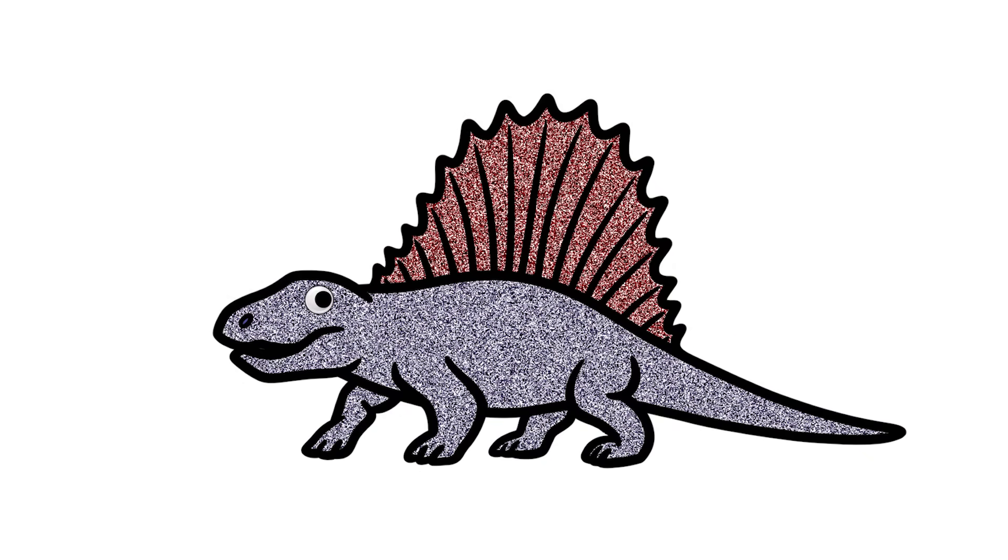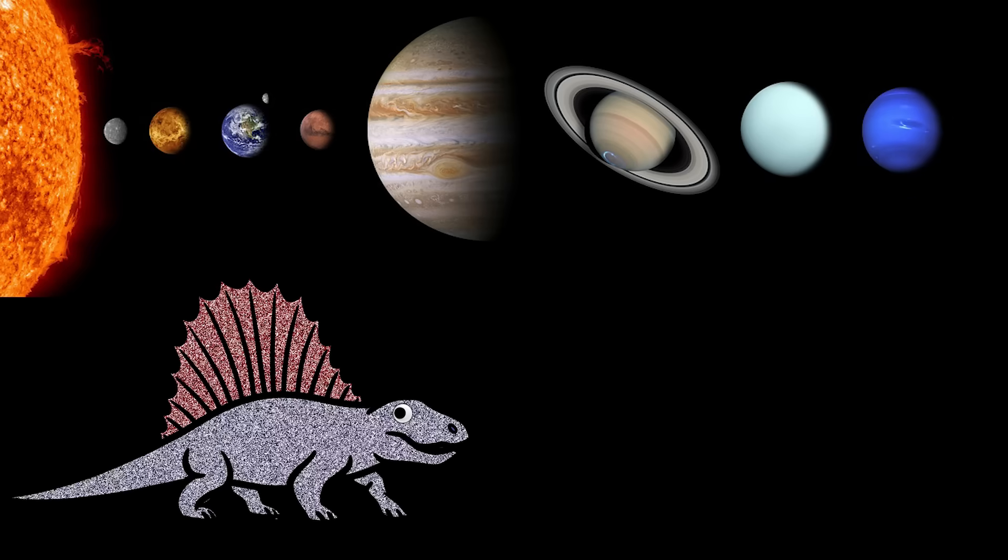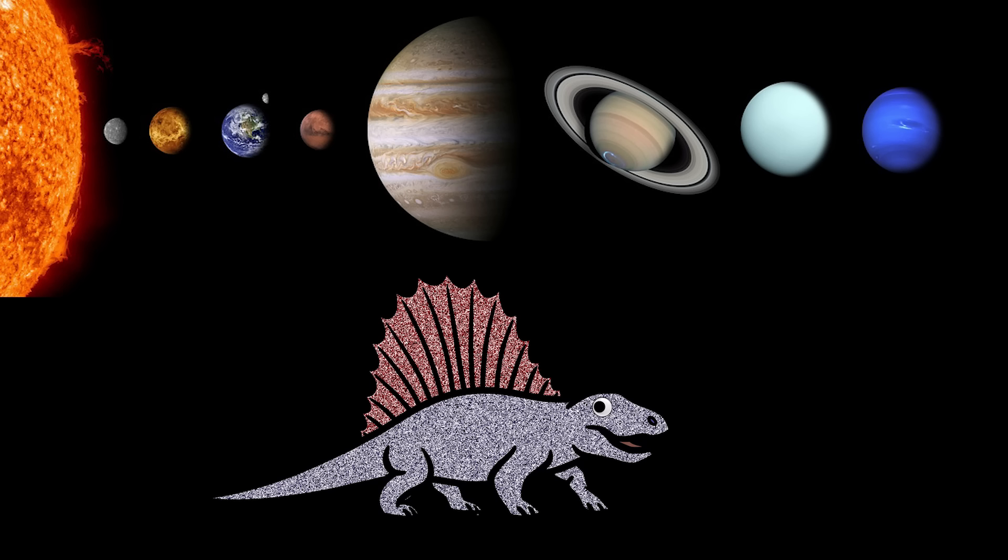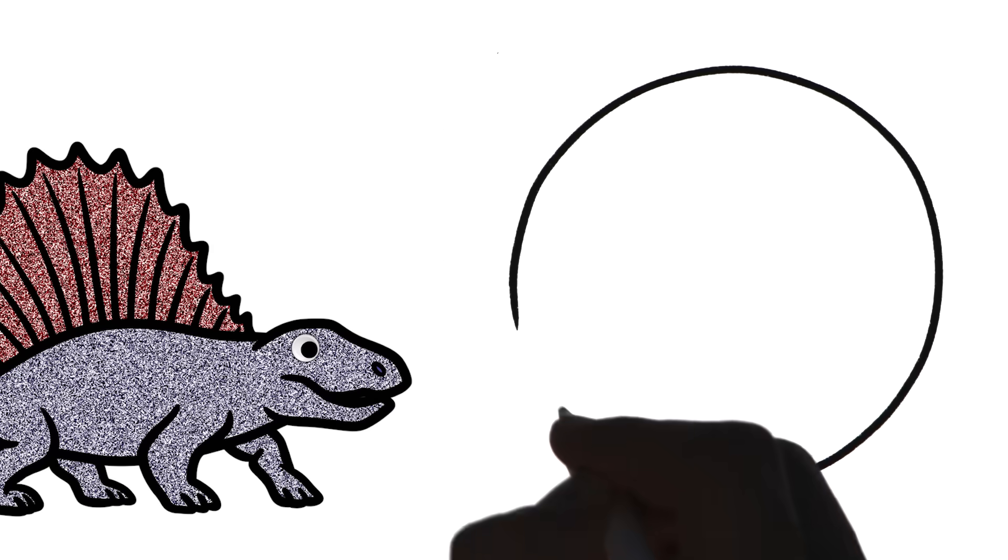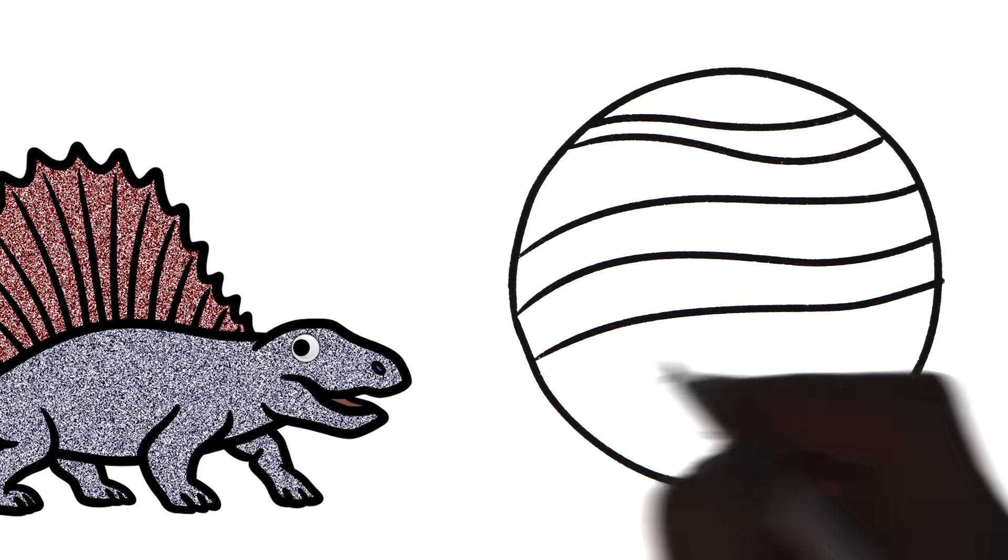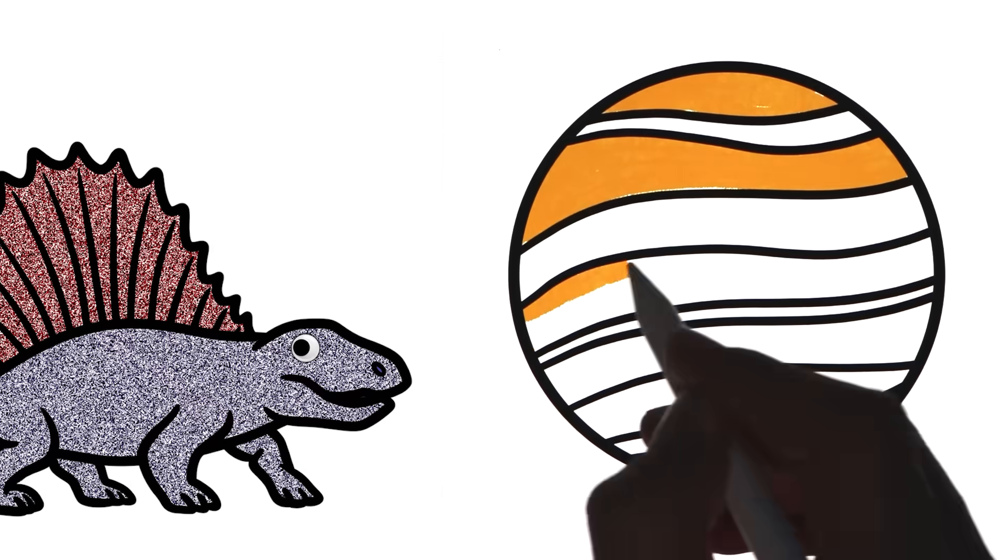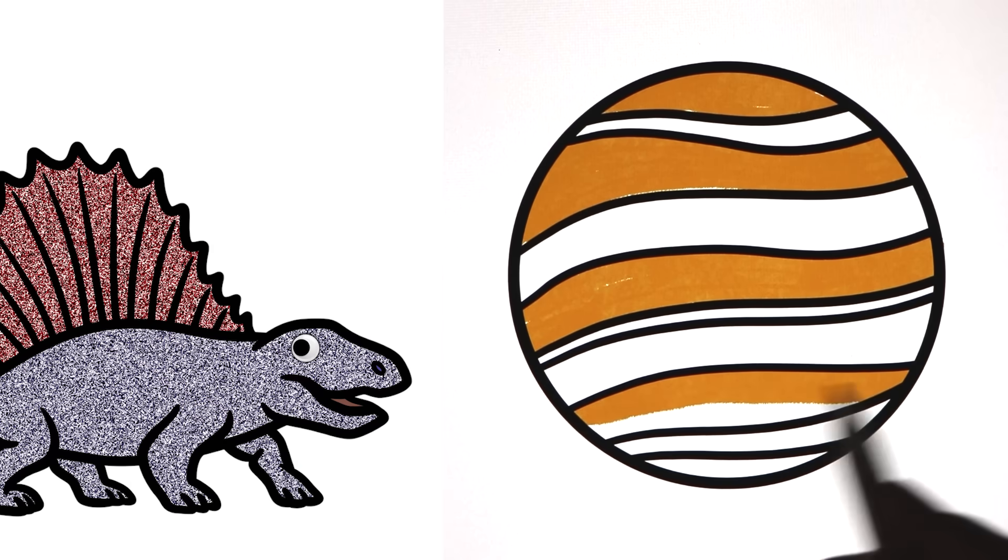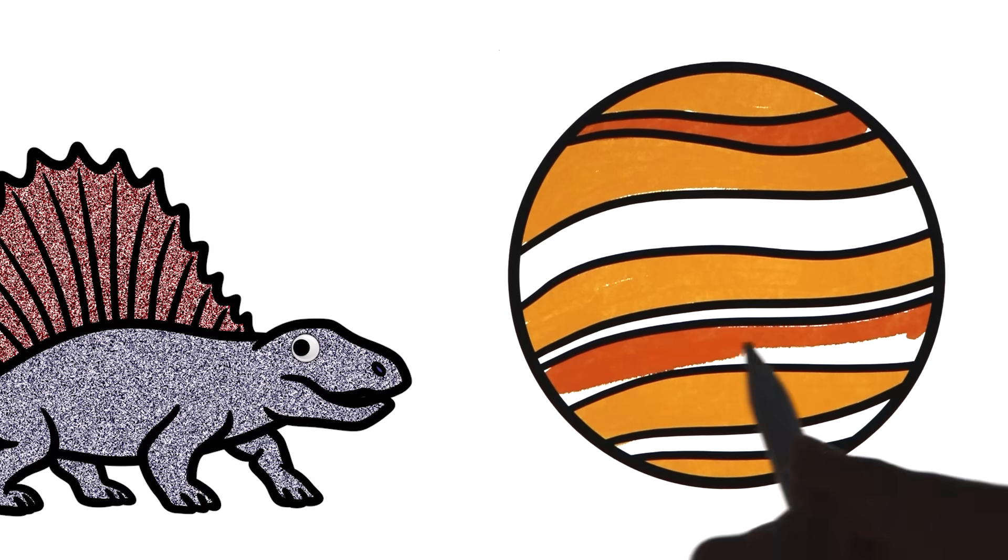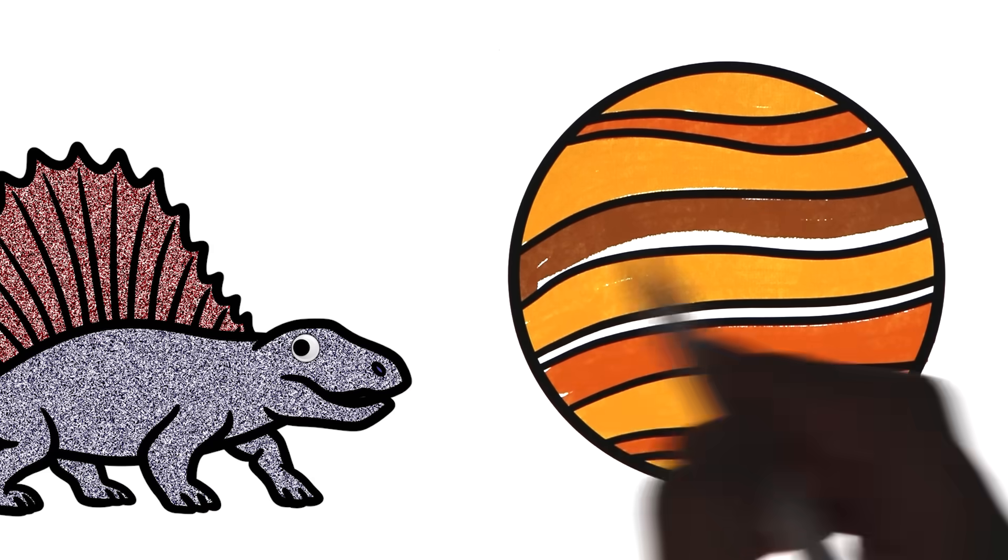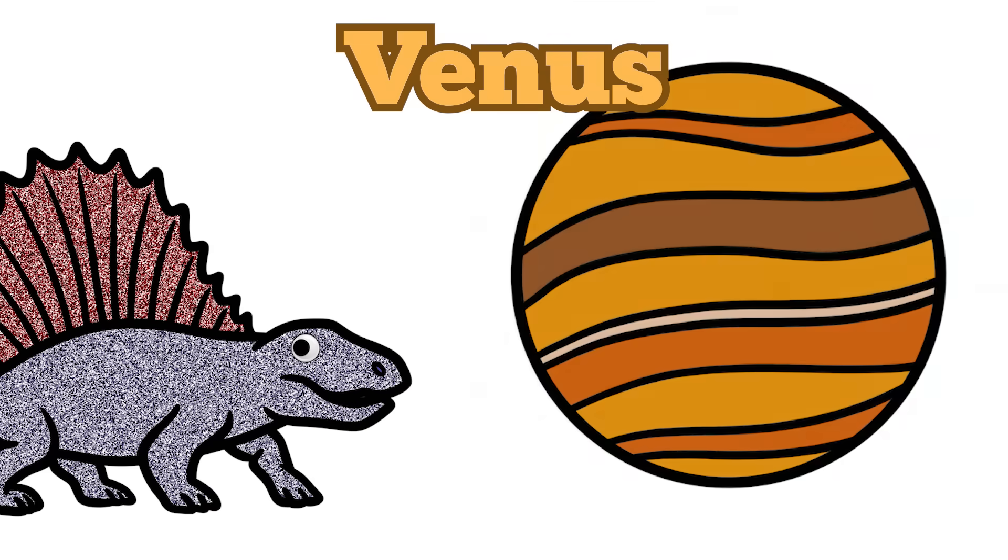Hello, my name is Dimetrodon. Hello, Dimetrodon. What's it like on Venus? Venus is the second planet from the sun. And it's the hottest planet in the solar system. Oh, so hot. Oh, and it spins the opposite directions of Earth and most other planets. Thank you, Dimetrodon. Bye. Bye, everyone.